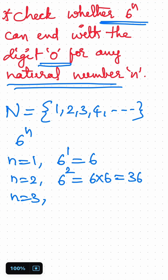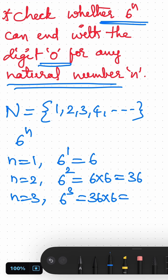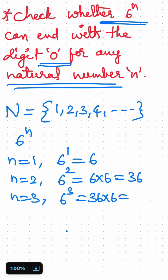n equal to 3, 6 cube equals 36 into 6, 216. Working through the multiplication: 6 times 6 is 36, carry over 3. Then 3 times 6 is 18 plus 3, giving 216.